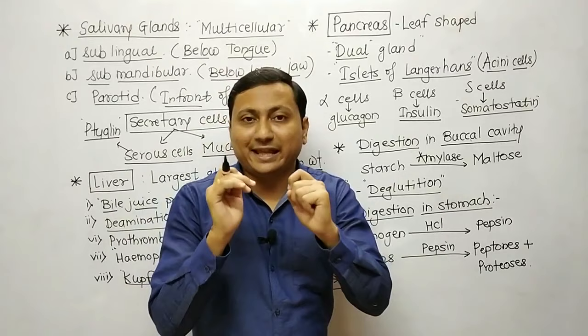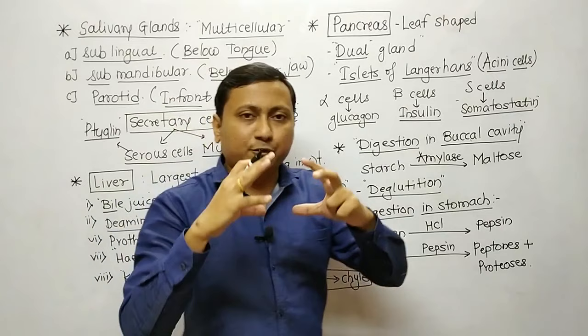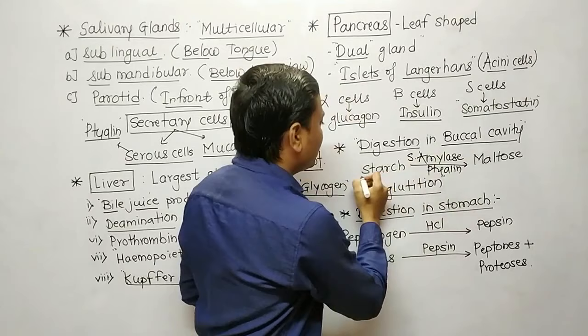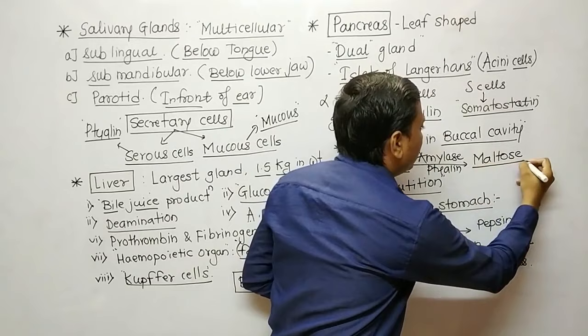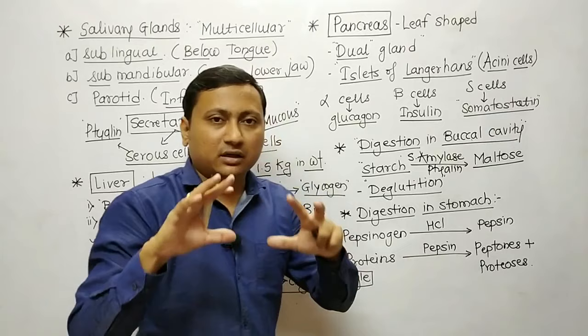Now we will study digestion in the buccal cavity. When we consume food, mastication occurs along with salivary amylase, also called ptyalin. The starch present in the food is converted to maltose. Starch is a polysaccharide — a complex food — now converted into maltose, which is a disaccharide. This is the definition of digestion. The digested food is pushed by the tongue into the esophagus; such a process is known as deglutition.